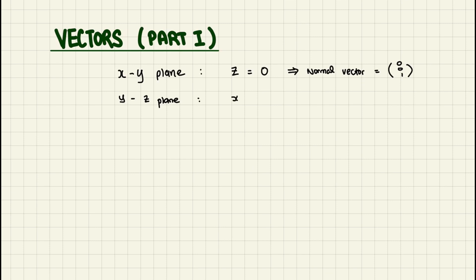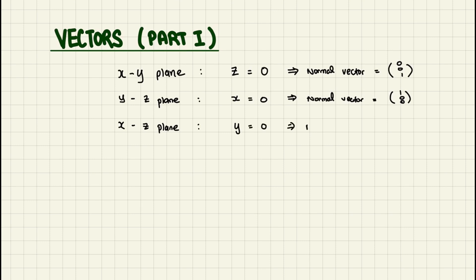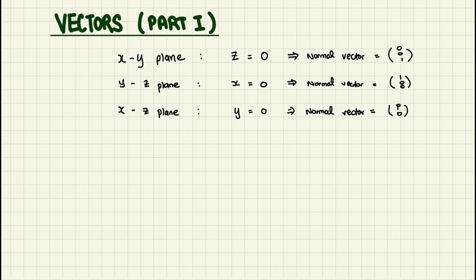For the YZ plane, x is equal to zero. A simple way to remember it: it's always the alphabet that is missing. The normal vector will be whatever value you have — in this case x, so it's (1, 0, 0). Remember the normal vector is perpendicular to your plane. Lastly, the XZ plane: y equals zero, and the normal vector will be (0, 1, 0).